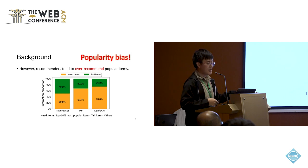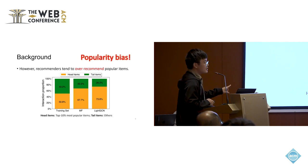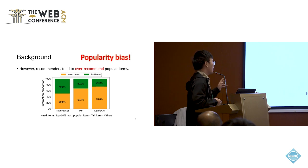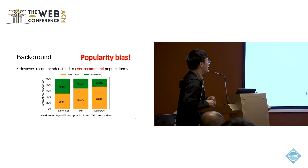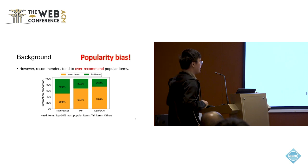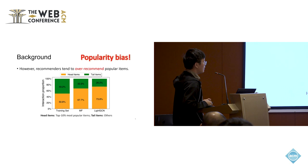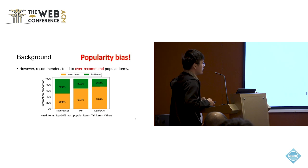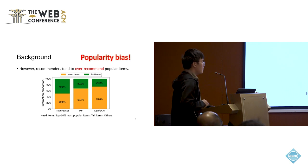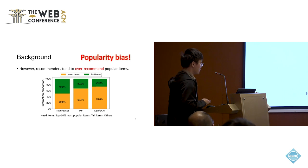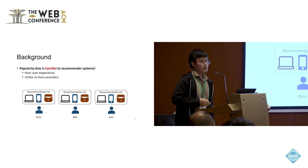We trained two well-known recommendation models — Matrix Factorization (MF) and LightGCN — and used them to recommend 15 items to each user. We found that for MF, around 67% of recommendations are head items, and for LightGCN, around 74% of recommendations are head items. This is popularity bias: models over-recommend popular items.